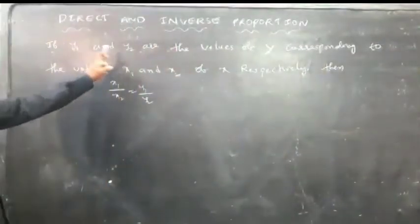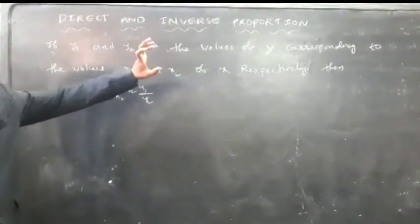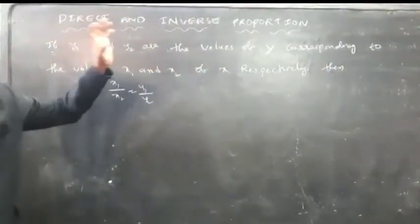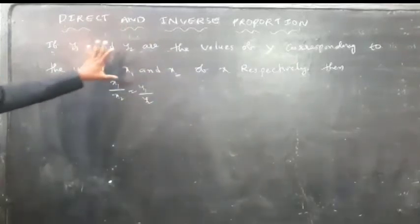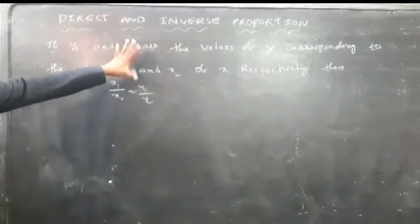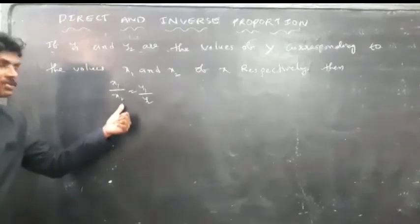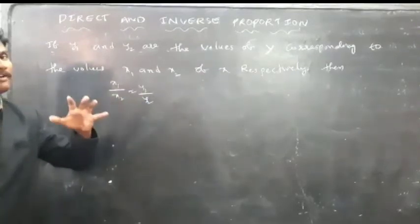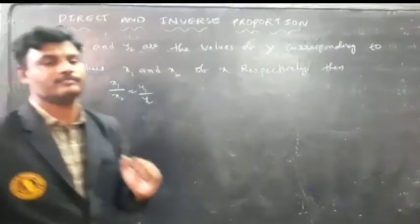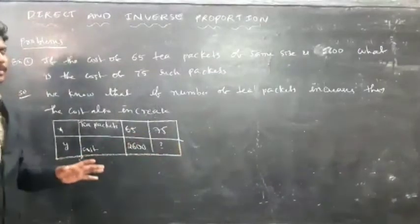If y1 and y2 are the values of y corresponding to the values x1 and x2 of x, then we can say x1 by y1 is equal to x2 by y2.